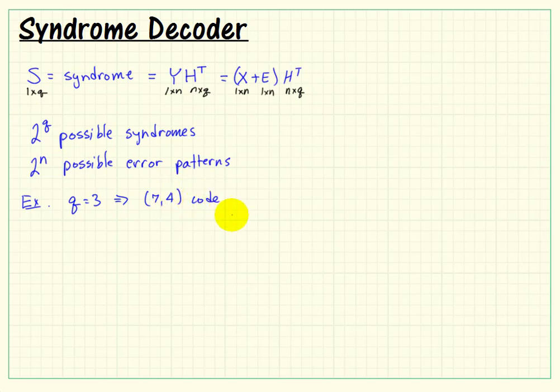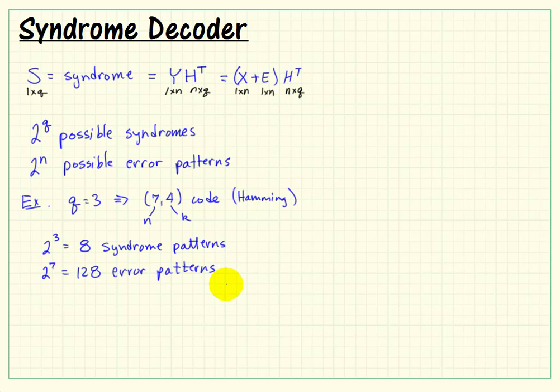Again, returning to the specific example of q equals 3 check bits, we know that leads to a 7-4 hamming code, leading to 4 message bits and 7 codeword bits. This says that we have 8 distinct syndrome patterns, but we have 128 distinct error patterns.